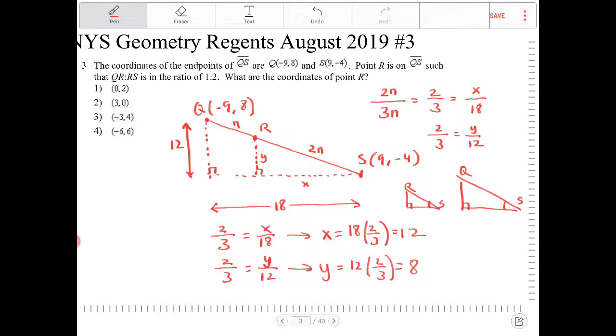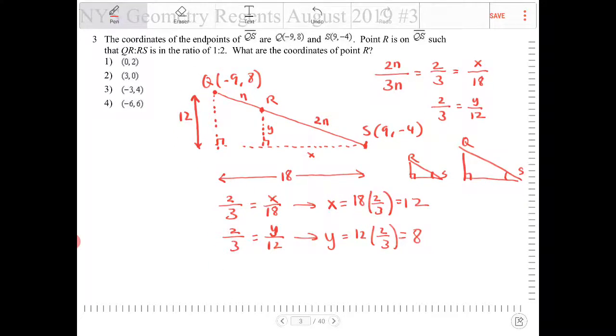So our goal is not to figure out what X and Y is. Our goal is to figure out what is coordinate R. So if you look at this, my coordinate S there is 9, negative 4. So from S, I'm going to have to move horizontally to the left by a value of 12 to the left. And then I need to go up from S, 8 units.